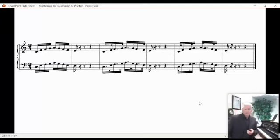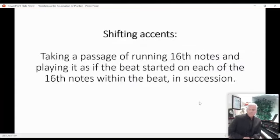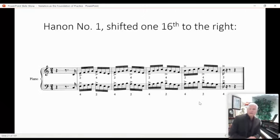And although we are shifting accents when we play this way, what I'm speaking about is really something different. And that is to take a passage of running sixteenth notes and accent each of the sixteenth notes of the beat in succession, of course. You can see that in this example. Here I've made the second sixteenth of the beat the downbeat, so that the second and fourth fingers in each hand are getting the emphasis instead of what would normally be the first and fifth fingers.